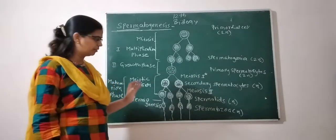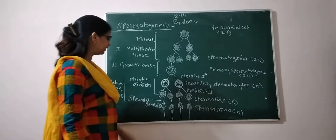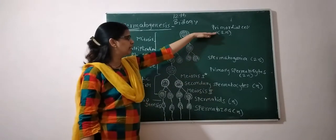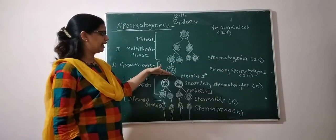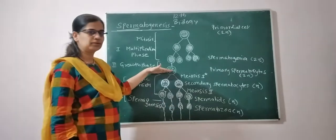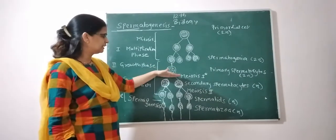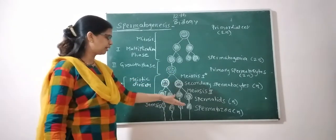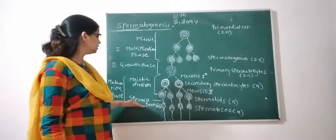In summary, the maturation phase follows this sequence: primordial cells form spermatogonia, which give rise to primary spermatocytes; through reduction division, secondary spermatocytes are formed; secondary spermatocytes again undergo division to produce spermatids, and ultimately spermatozoa. The total process is spermatogenesis.